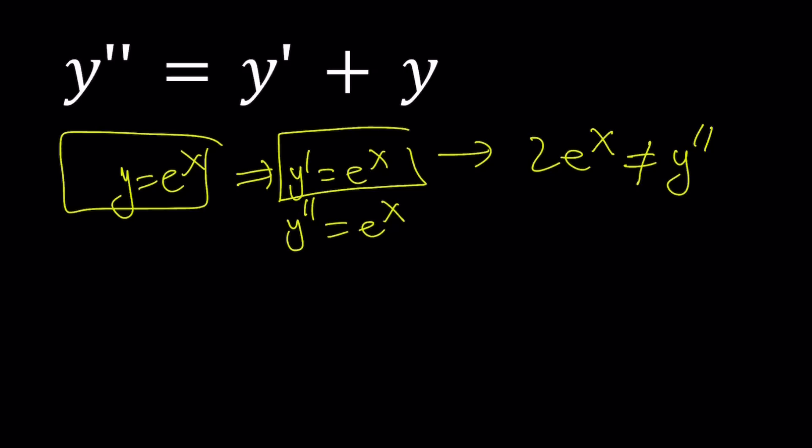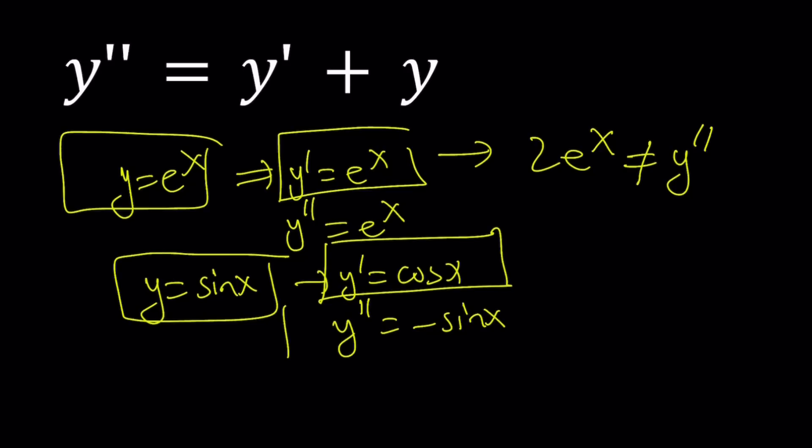Could it also be a trigonometric function? Maybe it's going to be sine of x. When you take the first derivative of sine, you're going to get cosine, and the second derivative is going to give you negative sine. When you add the function and the first derivative, that gives you sine x plus cosine x, which does not equal the second derivative. So sine x is not going to work.